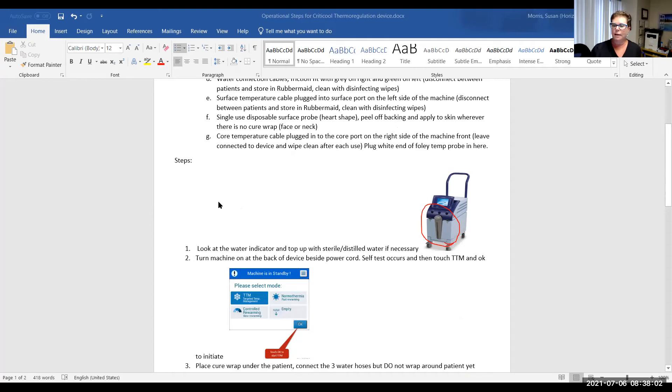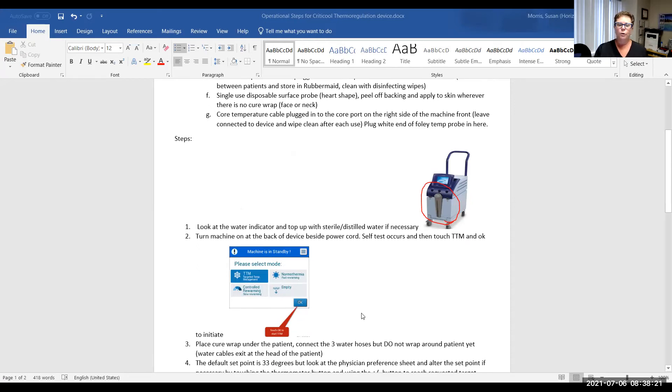And so our steps, we're going to take a look at the front, make sure that there is adequate distilled or sterile water in it. We're going to turn the machine on at the back. It will come on with this display. It defaults to targeted temperature management. So you're going to click OK. You're going to lay the patient up on his side and get the cure wrap underneath him with those three water cables coming out at the head. And you're not going to wrap it around him yet. You're going to connect them and ensure that it fills with water.